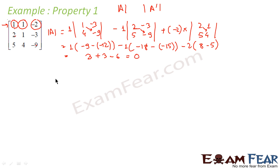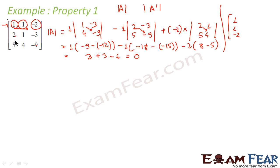Now what is the determinant of the transpose of A? The transpose of A is drawn by replacing rows with columns and columns with rows. So the row 1, 1, minus 2 becomes a column; row 2, 1, minus 3 becomes the second column; and row 5, 4, minus 9 becomes the third column. This is my transpose of A.